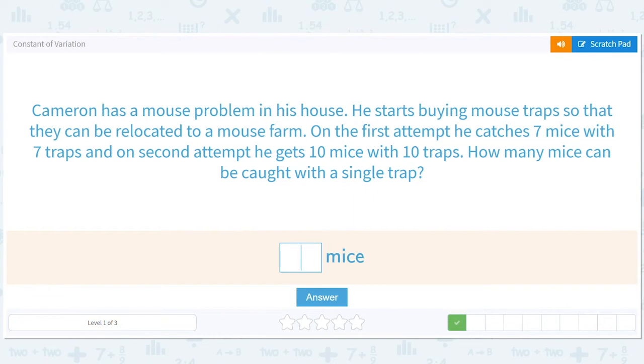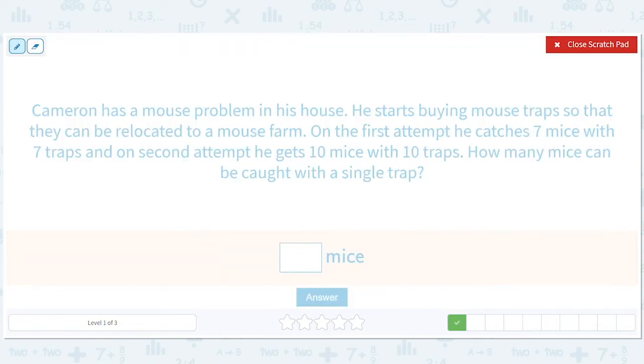So we have, let's quickly try to identify what the two things are. So they're mice and traps. On the first attempt, he catches seven mice with seven traps. On the second attempt, he gets 10 mice with 10 traps. So again, that looks like how many mice can be caught with a single trap. So we have one trap. You see the pattern here, right? These are just equal. So this will just be one.